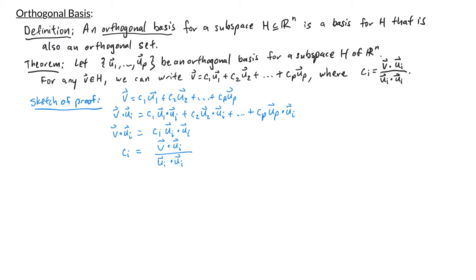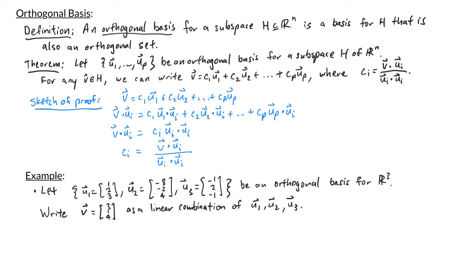For example, consider the vectors u1 = (1, 2, 3), u2 = (-8, -2, 4), u3 = (-1, 2, -1). We showed earlier that this is an orthogonal set, which means they are linearly independent. Since we have three linearly independent vectors in R^3, their span is all of R^3, so {u1, u2, u3} is an orthogonal basis for R^3.